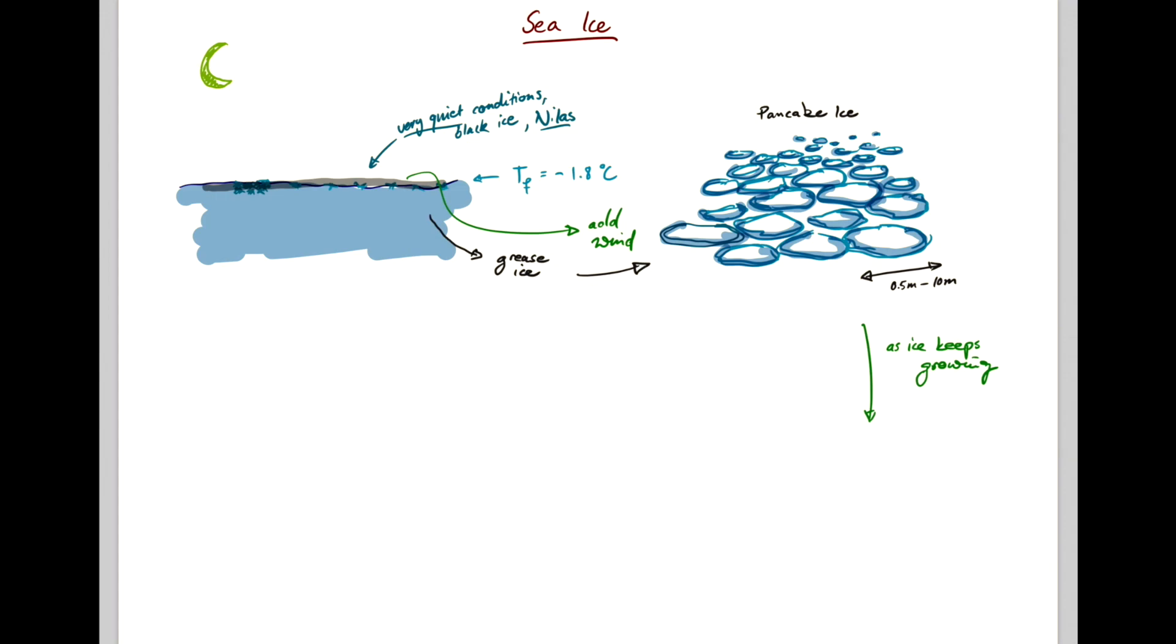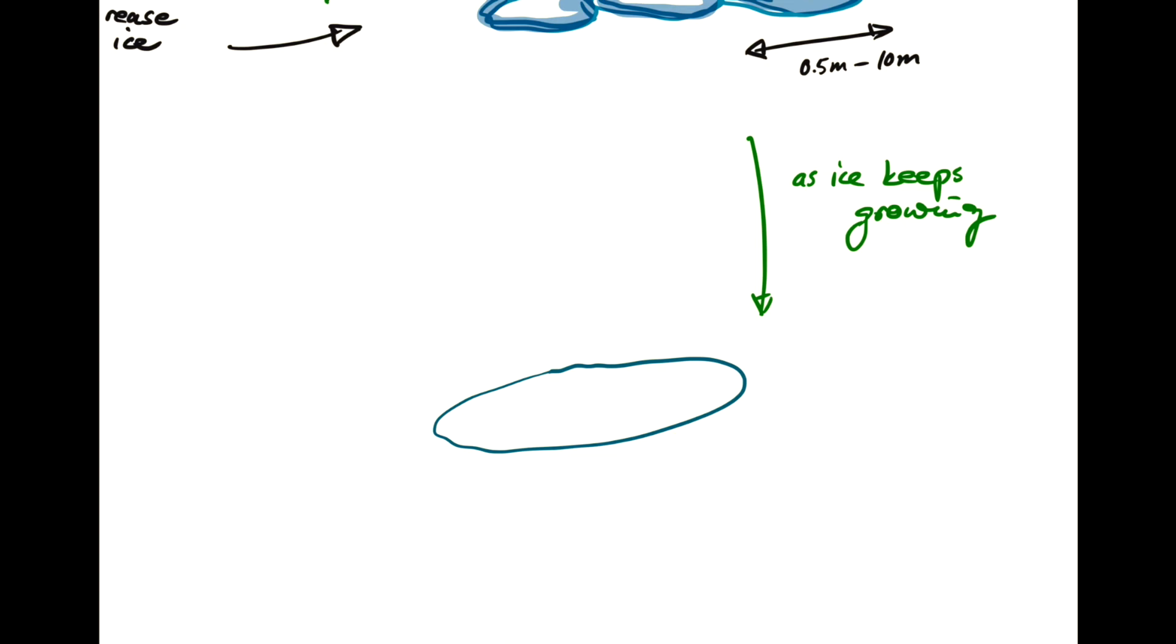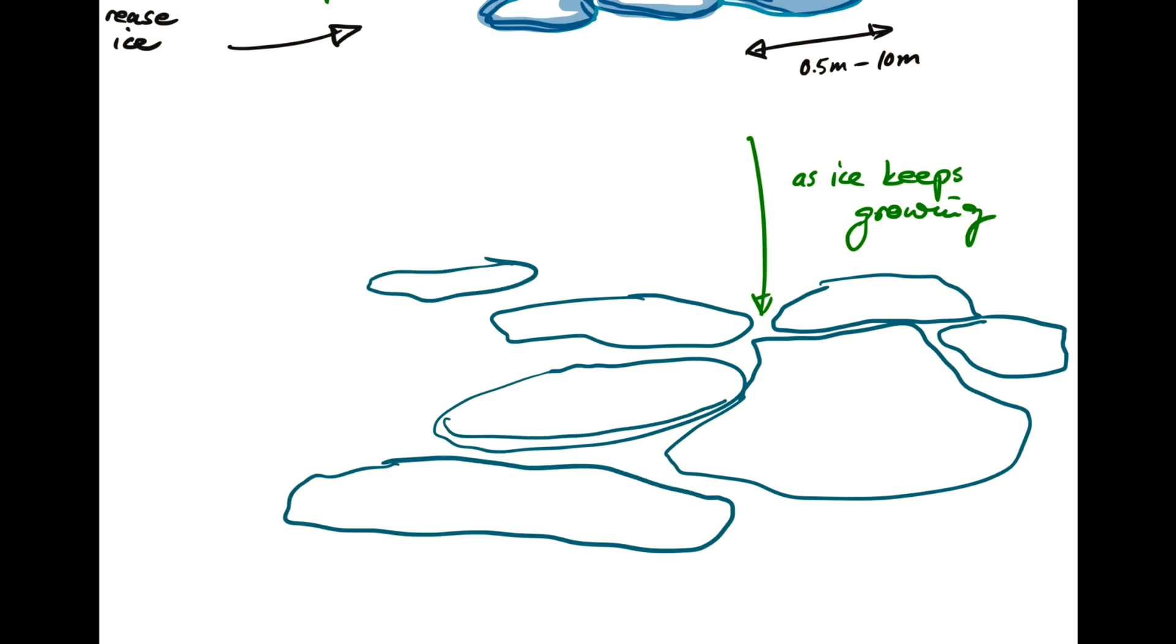Waves are dampened out and the wind effects are also suppressed. So you're starting to have these large flows of ice that then begin to be less circular, less regular.